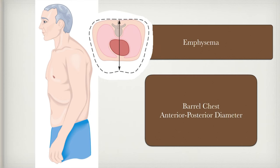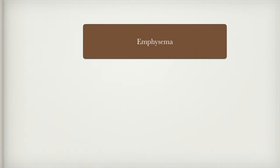Some of the air begins to get trapped, causing the chest to get bigger front to back — the anterior-posterior or AP diameter gets bigger. We call these patients barrel-chested because they look wider front to back. You can probably find pictures of barrel chest on the internet.